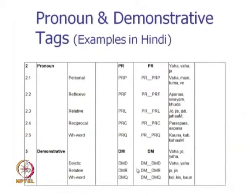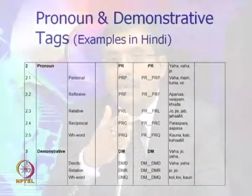Looking at the pronoun and demonstrative categories again, we find that both categories share many words between them. In fact, most words in the demonstrative category are also contained in the pronoun category, and it requires large context and complicated processing to distinguish between the categories and identify the correct tag. Part of speech tagging within or across categories is often not a simple problem to solve because of this kind of ambiguity.